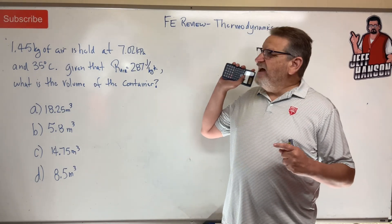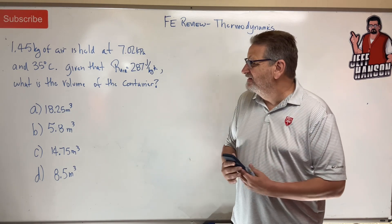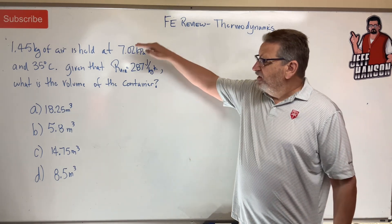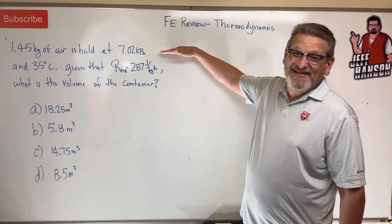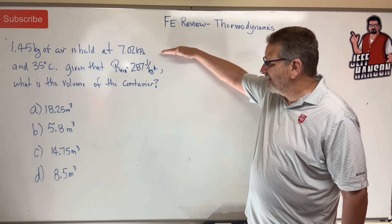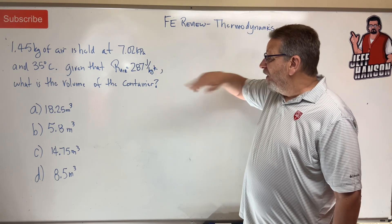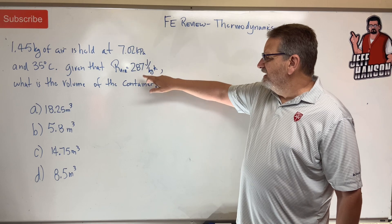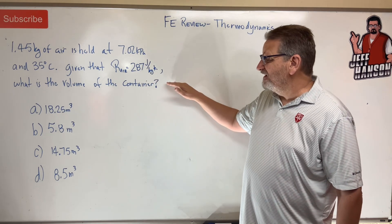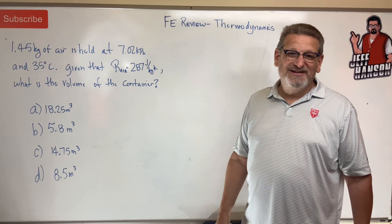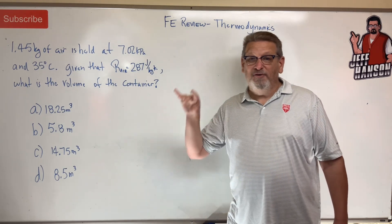Hey gang, welcome back — FE review problem, thermodynamics. Okay, so if you have 1.45 kilograms of air held at 7.02 kilopascals and at 35 degrees Celsius, given that R of air is 287 joules per kilogram kelvin, what is the volume of the container? See if you can work it — press pause, ready, set, go.